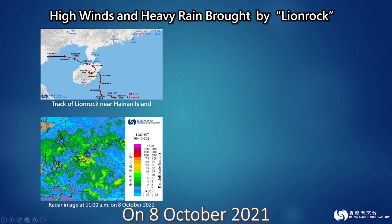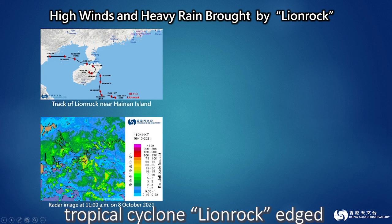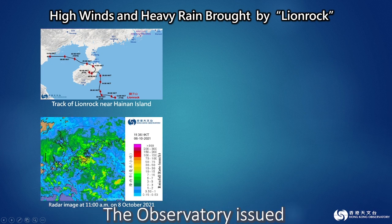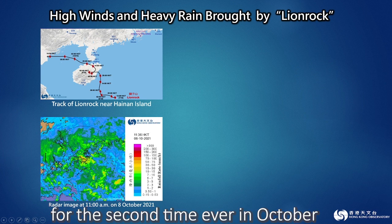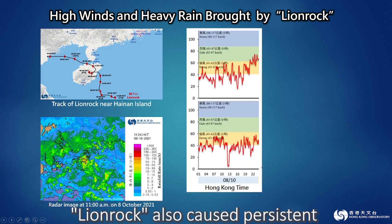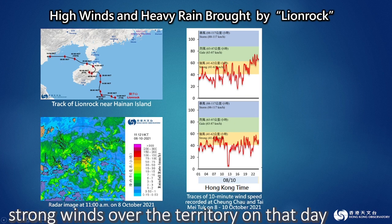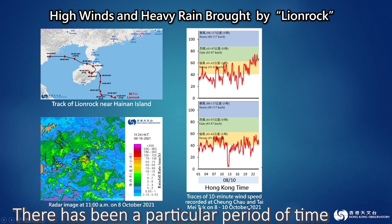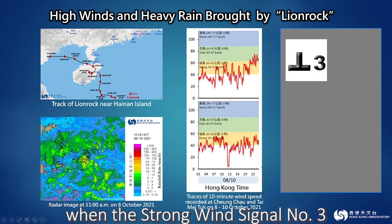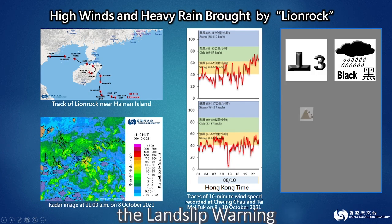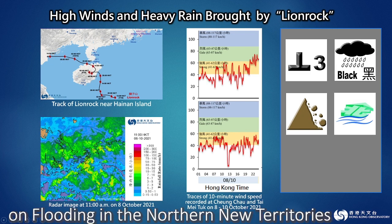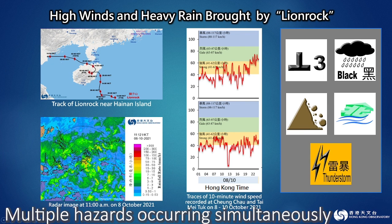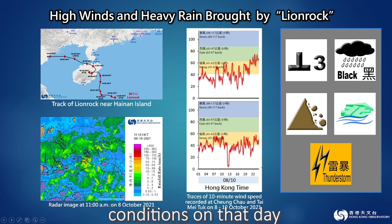On 8 October 2021, tropical cyclone Lion Rock edged close to Hainan Island. Its outer rain bands persistently brought widespread heavy rain to Hong Kong. The observatory issued the black rainstorm signal for the second time ever in October. Lion Rock also caused persistent strong winds over the territory, and the observatory issued strong wind signal number 3 in the morning. There was a particular period when the strong wind signal number 3, the black rainstorm signal, the landslip warning, the special announcement on flooding in the northern new territories, and the thunderstorm warning were all in force concurrently. Multiple hazards occurring simultaneously caused rather deteriorated road conditions on that day.